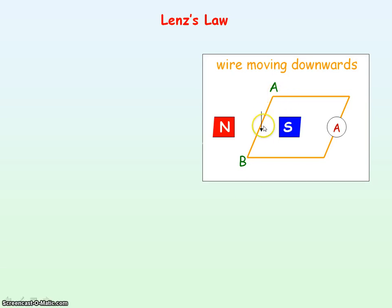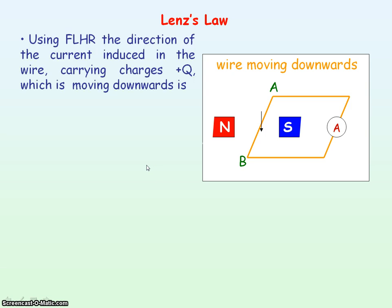So we're considering a wire, AB, that is moving downwards, cutting through the magnetic field lines of the north and south poles. Inside the wire we have positive charges, so these positive charges are moving downwards with the wire. So you've got moving charges moving perpendicular to a magnetic field, and so they will experience a magnetic force. We can use Fleming's left-hand rule to determine the direction of that force.